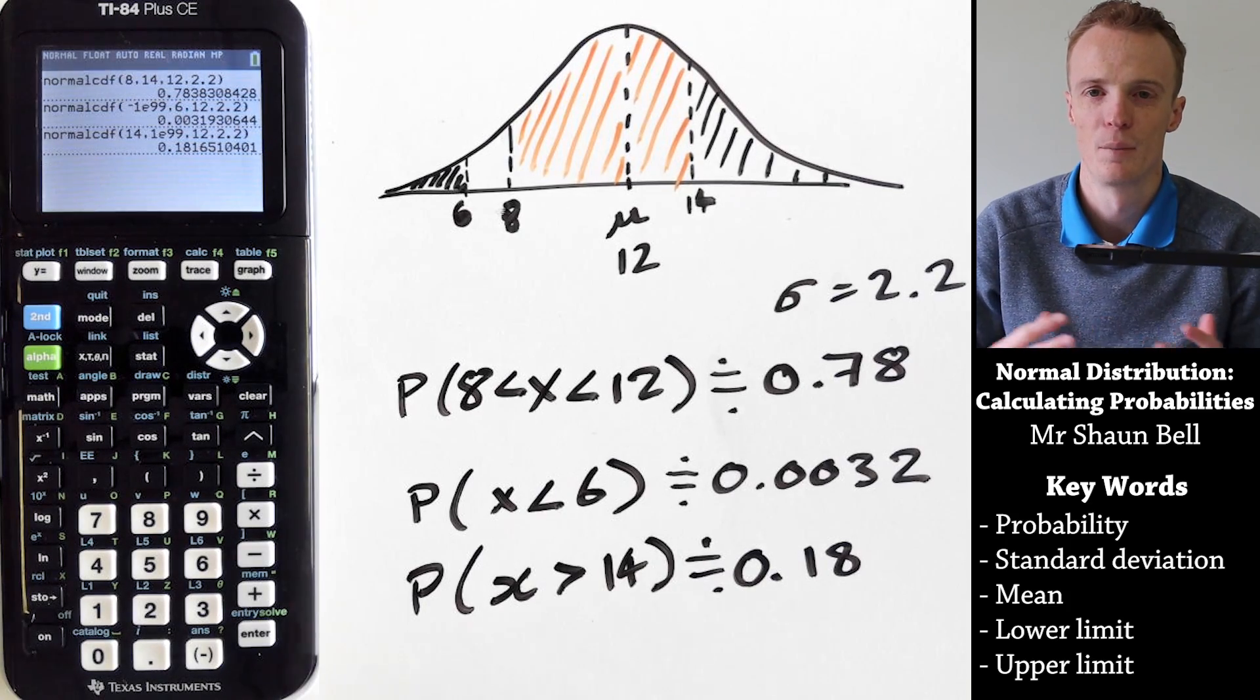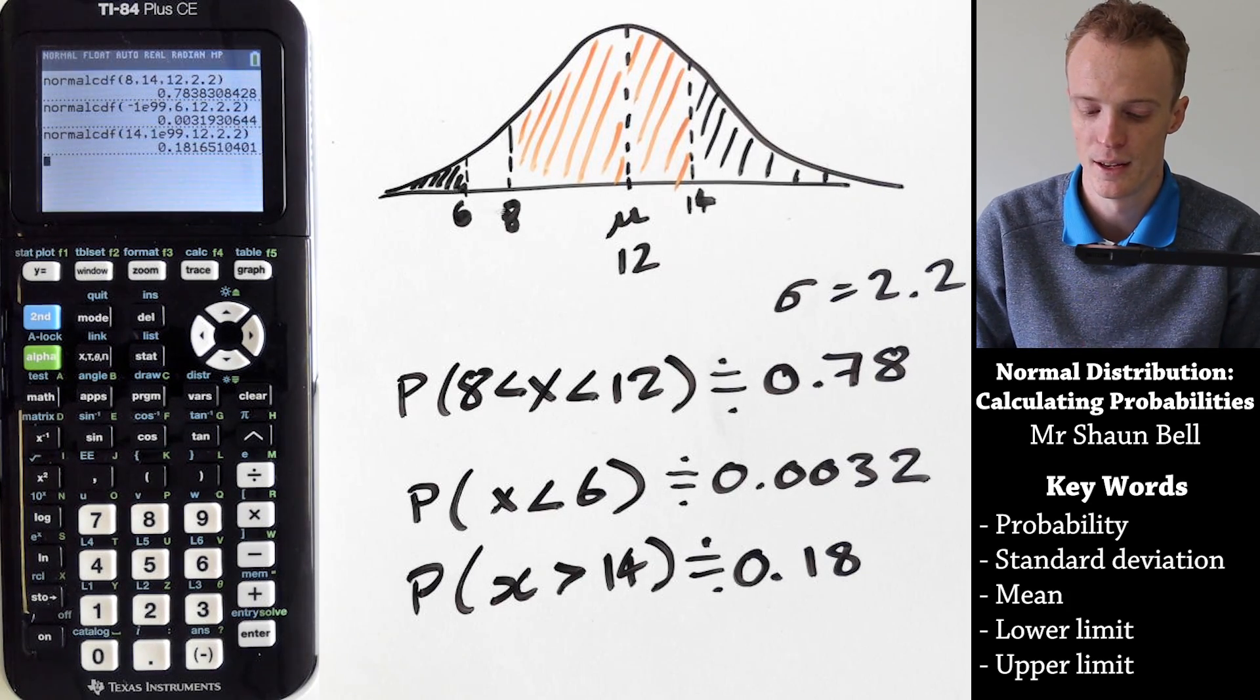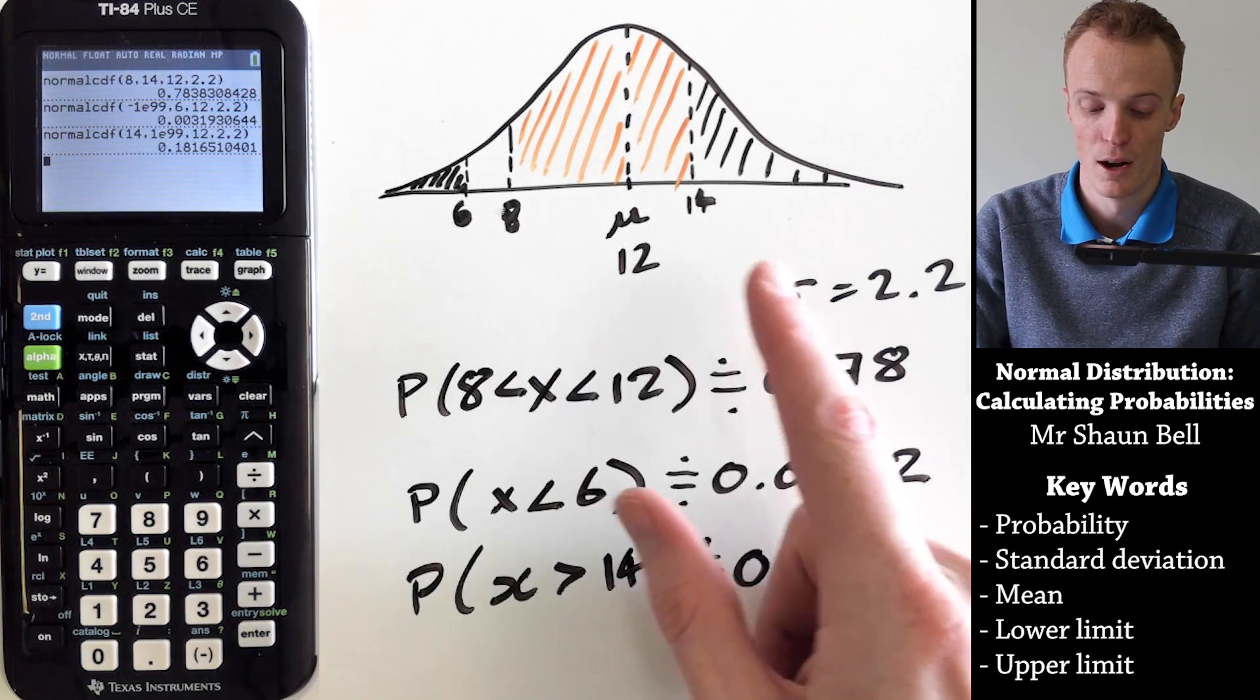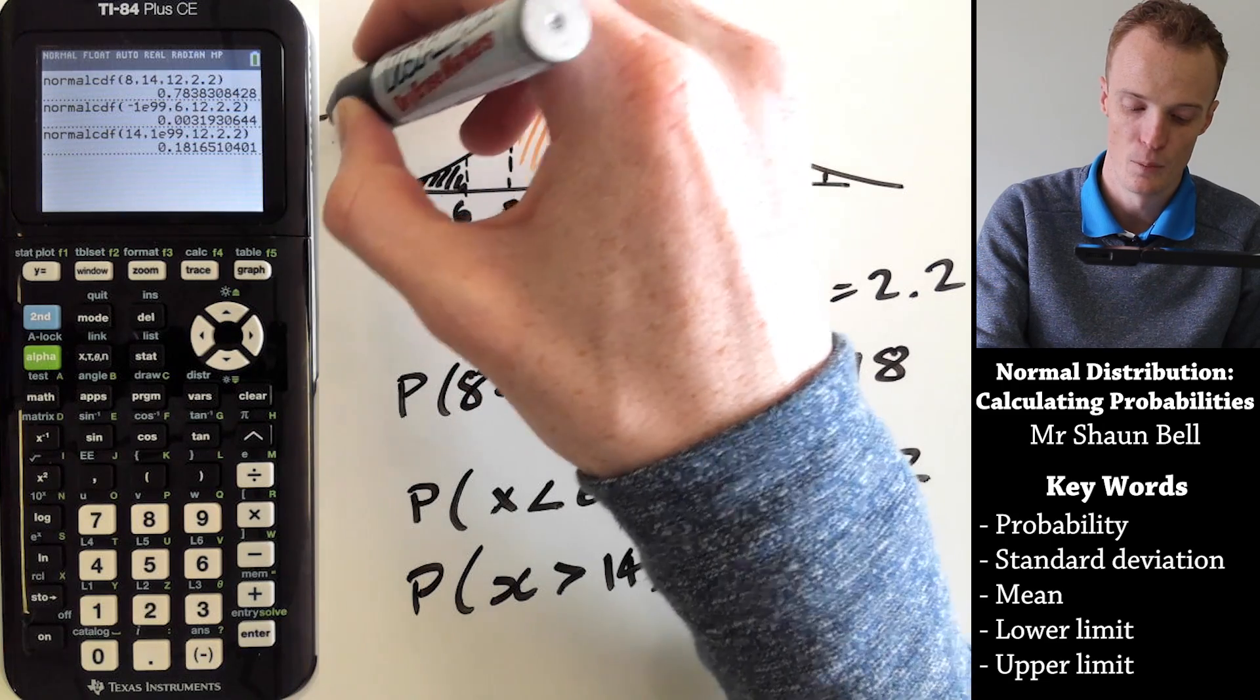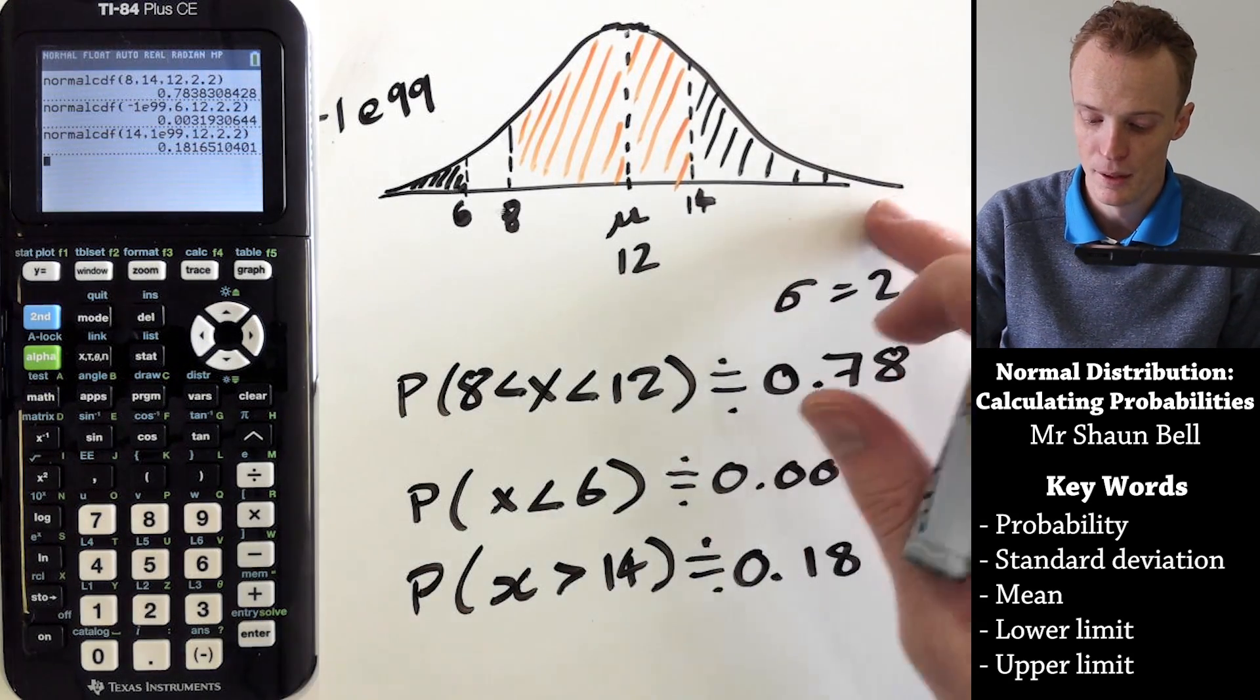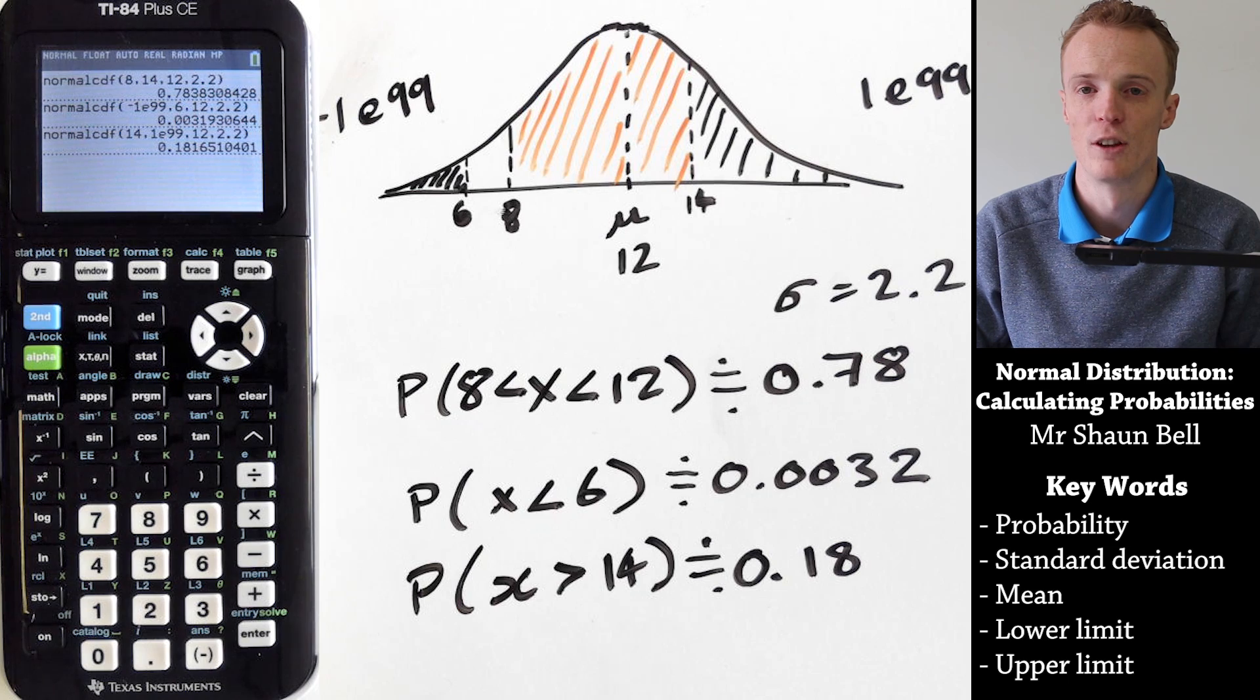So in order to calculate the probabilities underneath a normal distribution, you need a few pieces of information. The first thing you need to identify is the mean and the standard deviation. Then you need to know what the lower and upper limits are on your graph. If there is no lower limit, we put into our calculator negative 1 e to the 99, which is a really really small number. If there is no upper limit, then we put positive 1 e to the 99, which is a really really large number.